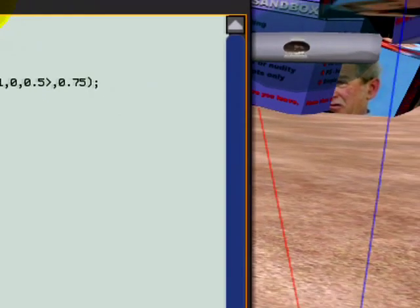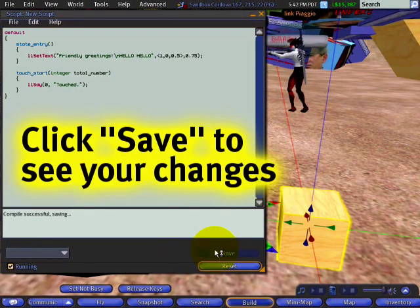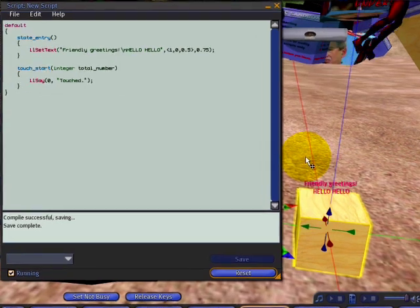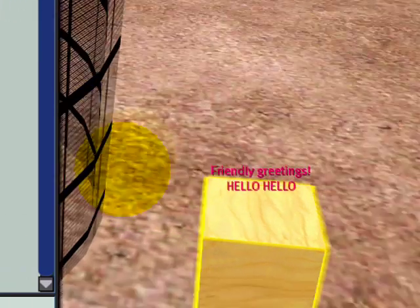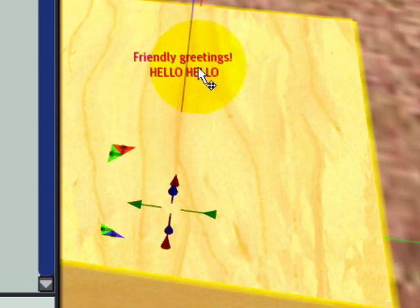And now that's done, I just move this to the side here and save it. Oh my gosh, griefing in the sandbox. You must stop. Okay. And after it's saved, save complete. And right here, I can zoom in. And right here, it says friendly greetings. Hello, hello.